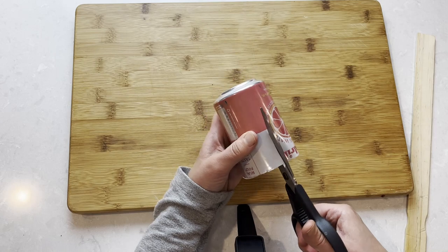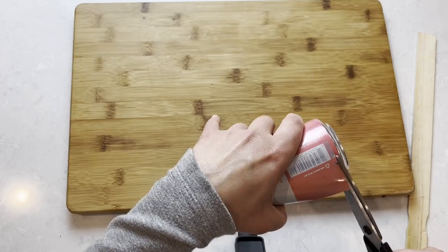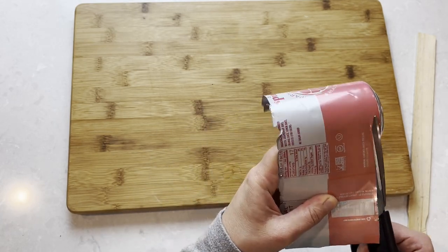Once the top is off, we're gonna turn this around and cut down the side at a 90 degree angle. Next, we go around and cut off the bottom of the can.